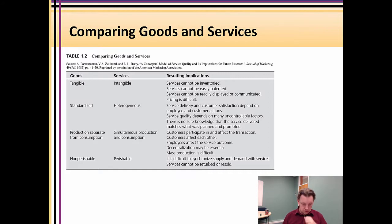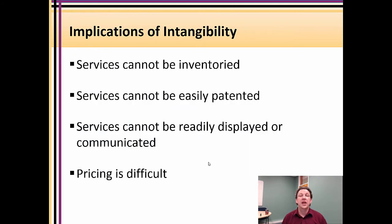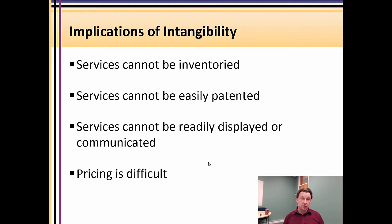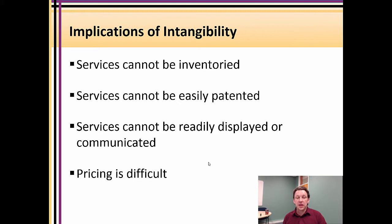Looking at intangibility as the first facet: the intangible nature of a service means you can't build an inventory of services. In an empty room, you can't fill it with services to draw on later — you can't prepare half a dozen haircuts in advance to distribute to people to take home. So intangibility removes the ability to stockpile and inventory. It also means that some of the cues consumers rely on — being able to observe a product in advance — are not present. You can't really display a service without someone experiencing it.